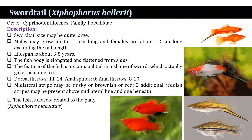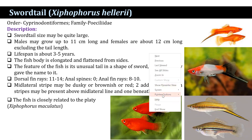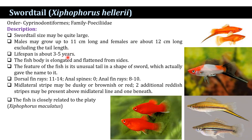They belong to the order Cyprinodontiformes and family Poeciliidae. The size of the swordtail may be quite large. Males may grow up to 11 centimeters, while the females are about 12 centimeters, excluding their tail length, and the lifespan is around three to five years.